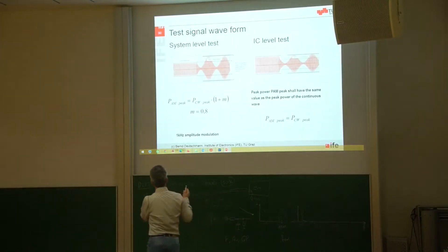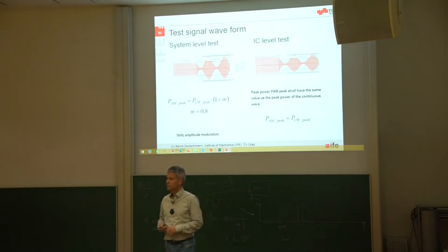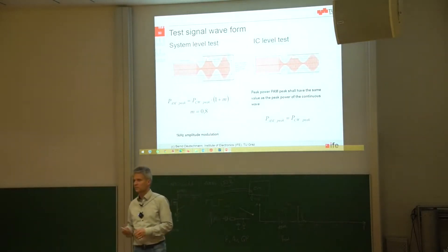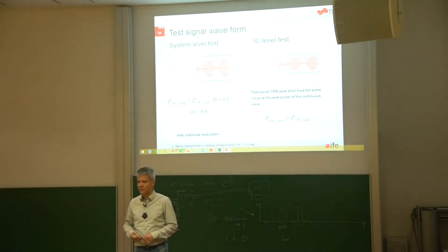Okay, so let's first talk about the typical disturbance waveforms. Very often we are using radio frequency interference signals, in this case continuous wave signals or amplitude modulated signals.